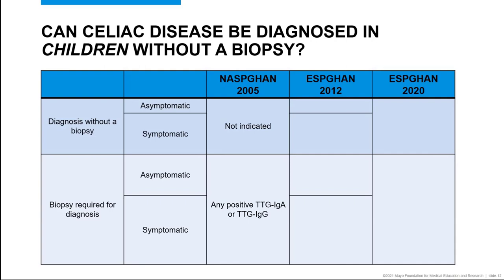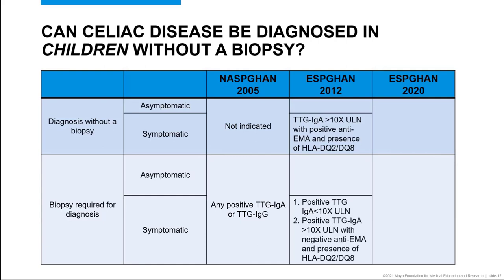The European Society for Pediatric Gastroenterology, Hepatology, and Nutrition guidelines published in 2012 were the first to consider the biopsy-free diagnosis. For symptomatic patients, a positive TTG IgA greater than 10 times the upper limit of normal with a positive EMA and HLA-DQ2/DQ8 typing has such a high predictive value for celiac disease that a biopsy would not be needed. In contrast, patients with a positive TTG IgA less than 10 times the upper limit of normal, or a positive TTG IgA greater than 10 times the upper limit of normal with a negative EMA, should be further evaluated with a biopsy. For asymptomatic individuals, these guidelines recommended against diagnosis without a biopsy; a positive TTG IgA greater than three times the upper limit of normal, or a positive TTG IgA less than three times the upper limit of normal with a positive EMA, should be followed by a biopsy.